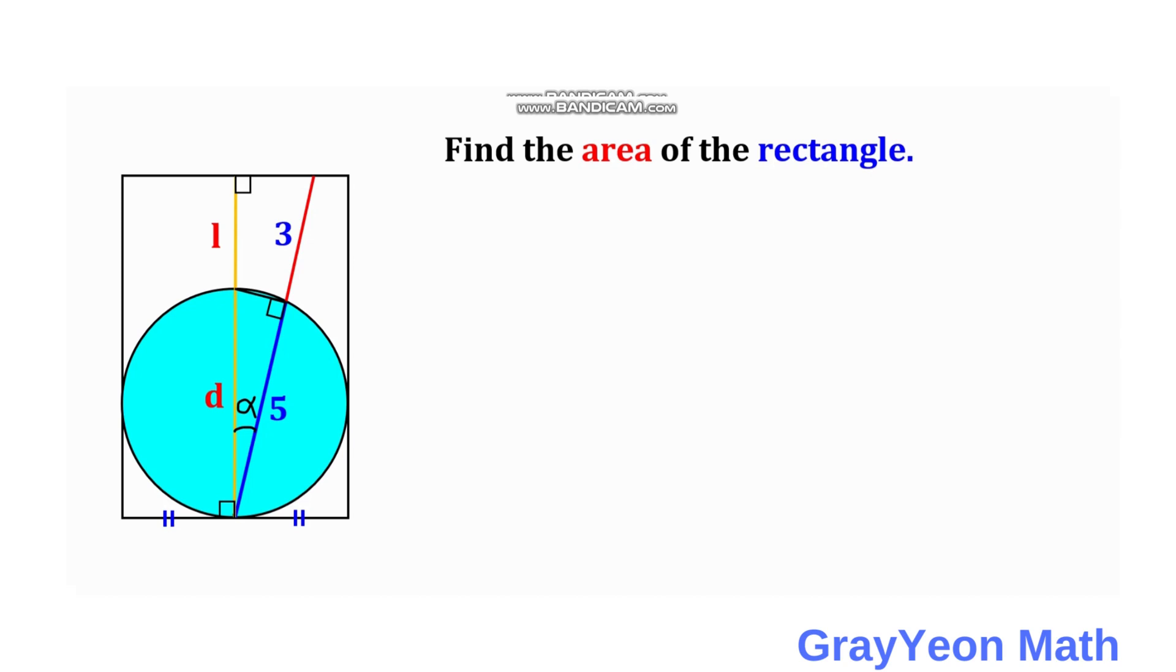And this angle should be 90 degrees by Thales theorem, over the hypotenuse which is the D. So next we draw a line from this intersection of the same angle alpha and this orange segment. We are focusing on this triangle and this one connected to the blue segment.